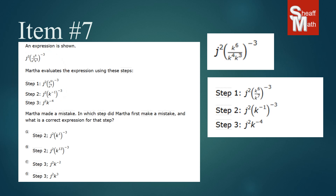The first thing that happened — if we look over to the right — she multiplied these two powers: k to the fourth times k to the third. When you multiply powers with the same base, you can add their exponents. So she did that and got k to the seventh. There's nothing wrong with that, so step one looks good.